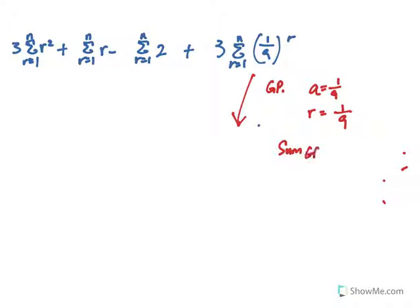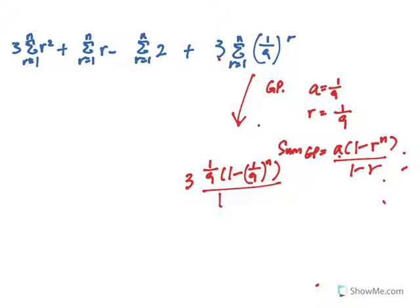And from here, we're just going to use the summation of a GP. The sum of a GP, if you still don't know, basically revise: a(1 - r^n)/(1 - r). So very quickly, we have 3 times summation, 1 over 9, a(1 - r^n)/(1 - r). This is for the third term.